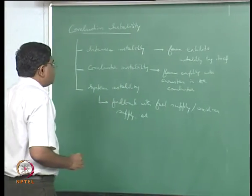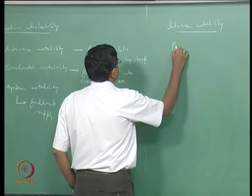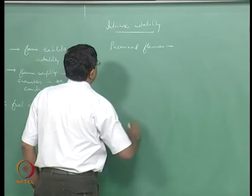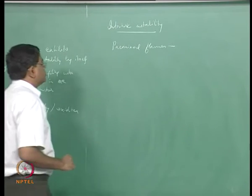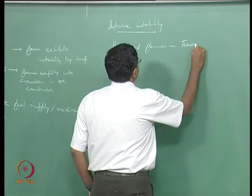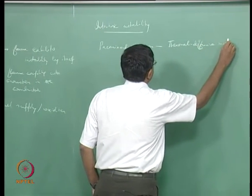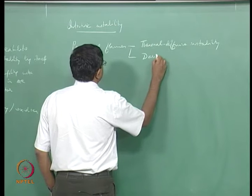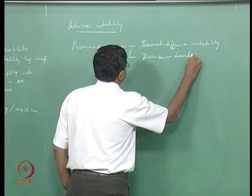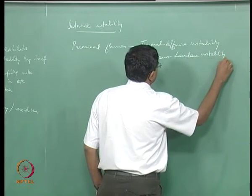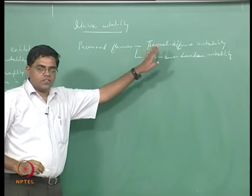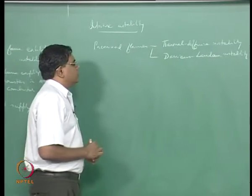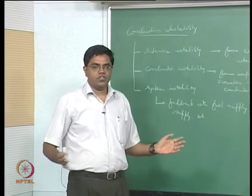For intrinsic instability, we look at premixed flames. Two things are discussed: the thermal-diffusive instability and the Darrieus–Landau instability. We discussed these earlier in the context of corrections to laminar flame speed, involving effects of flame curvature and flow divergence.